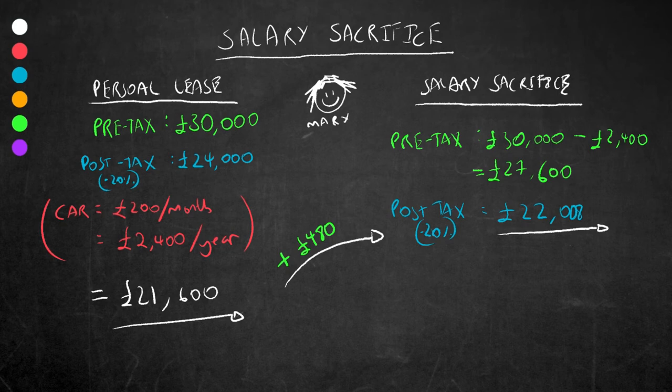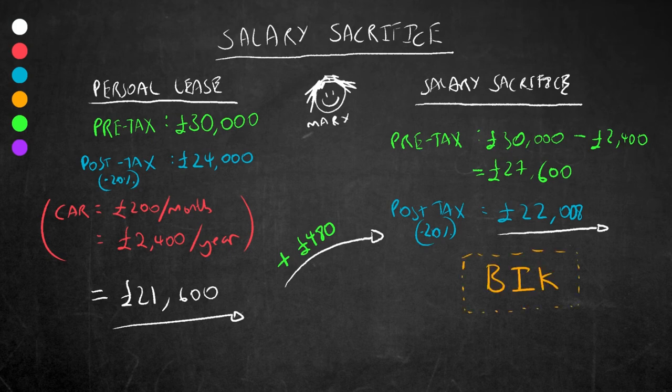Now Mary and employer have not avoided tax completely. Of course, the government will always find something to tax you on and that something is called a benefit in kind tax that must be paid on any good bought with salary sacrifice. However, this benefit in kind tax or BIK tax varies depending on what non-cash benefit is.